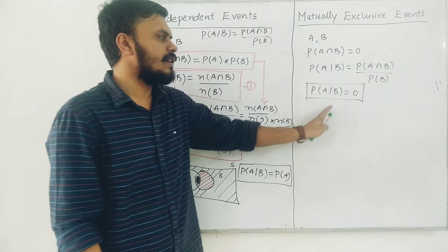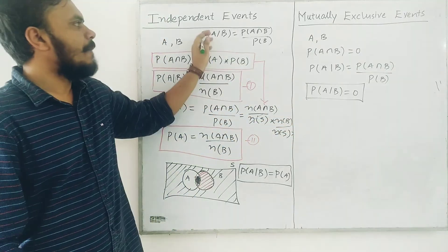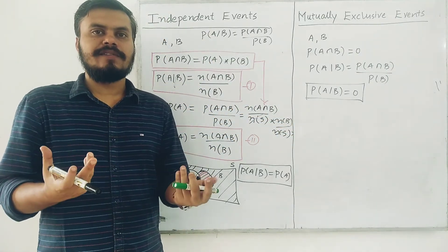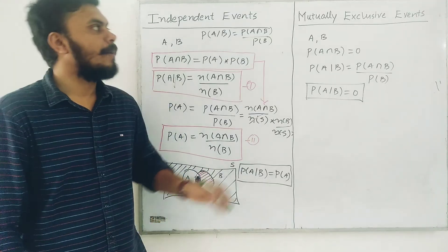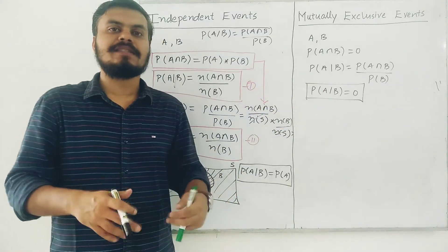So that's the thing. Independent events exist together. It's just that one event doesn't affect the other. But mutually exclusive events don't exist together at all.